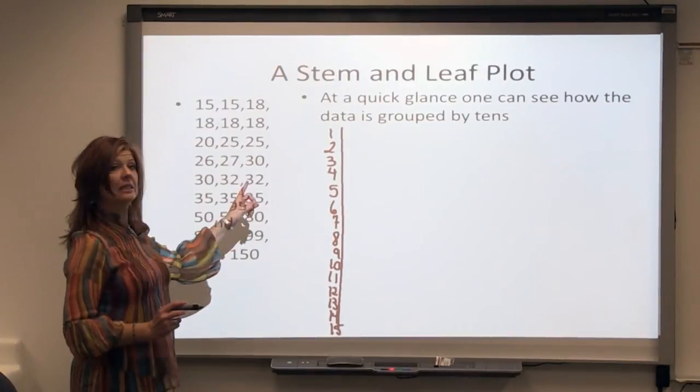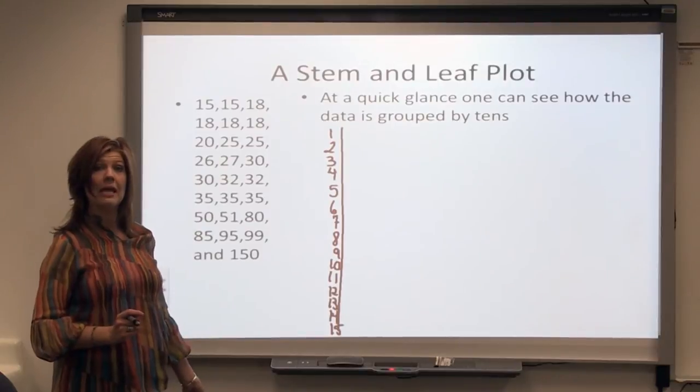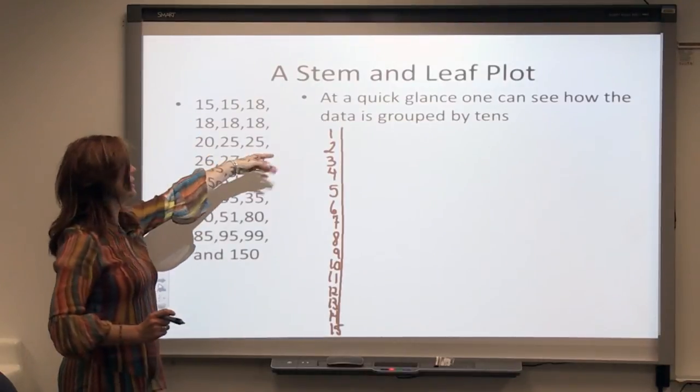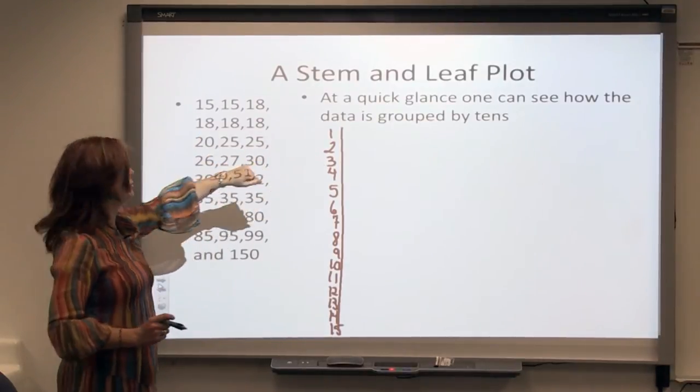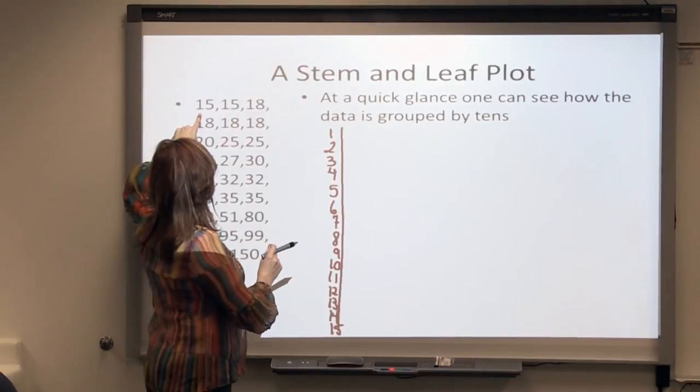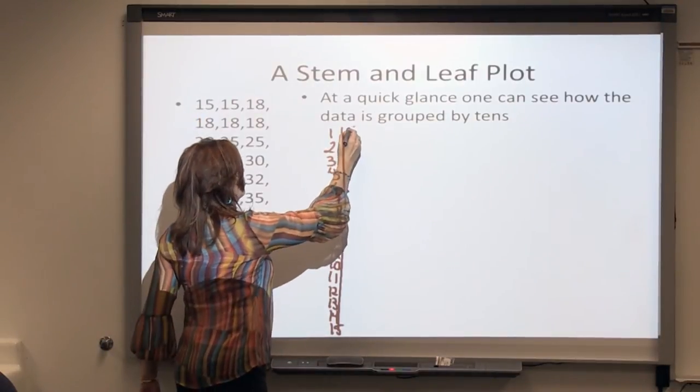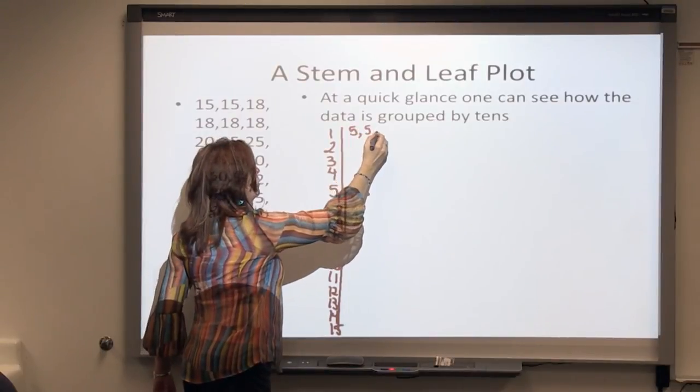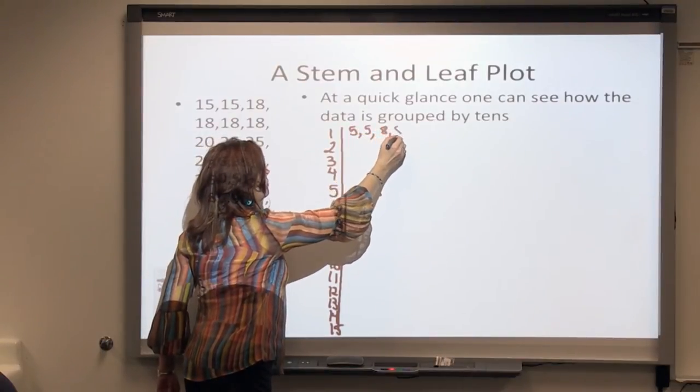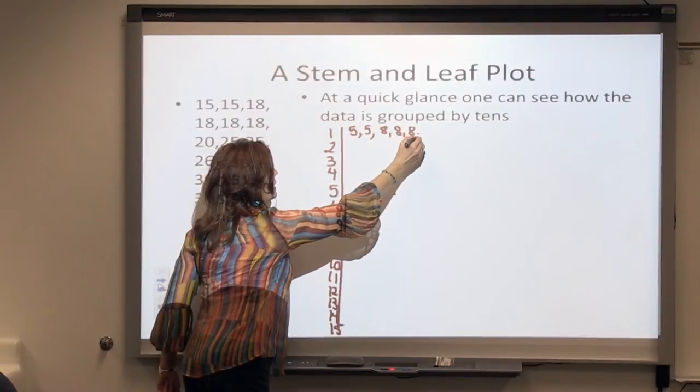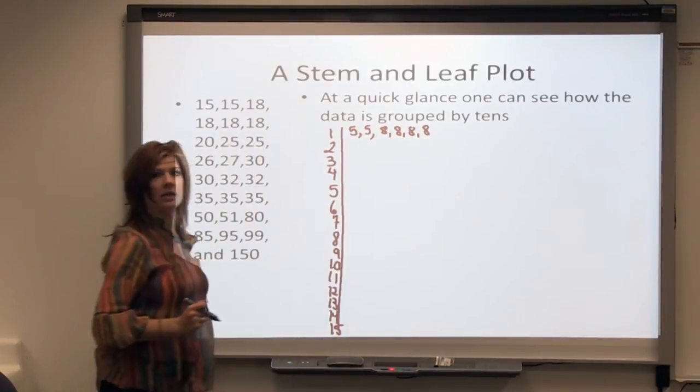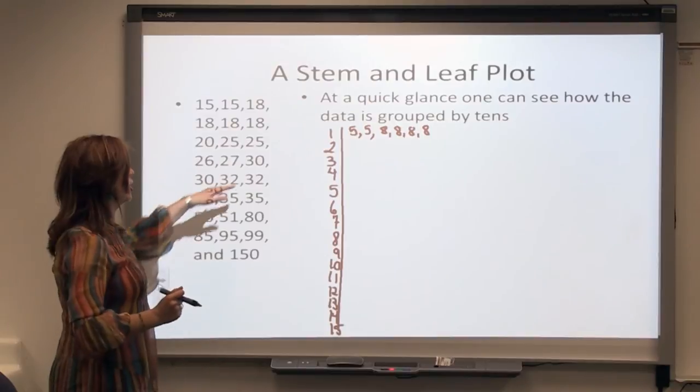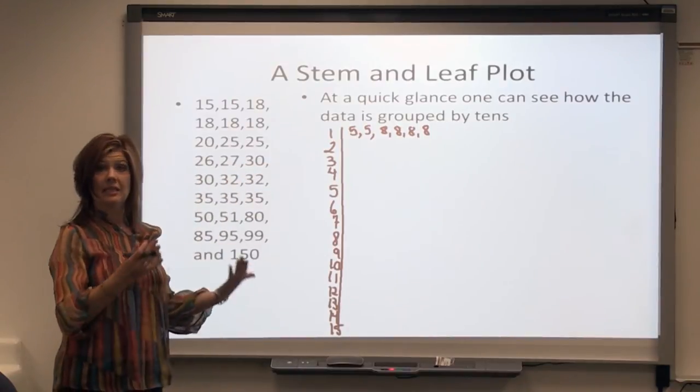Now I'm going to list how many people are making something in the tens of thousands. There's one person that makes $15,000, another person that makes $15,000, and four people are making $18,000 a year. So I can see that there are six people that make in the teens.